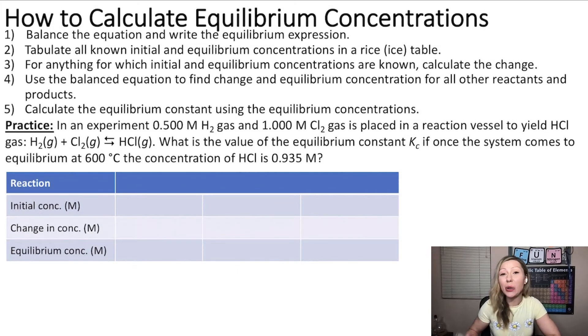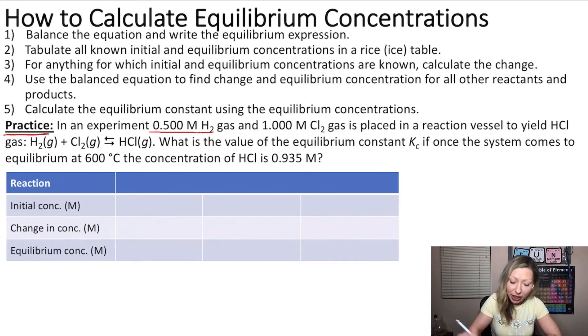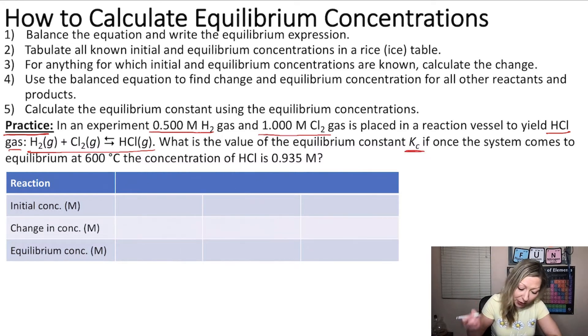Hello guys, let's learn how to calculate equilibrium concentrations using a practice question. Here we have 0.5 mol per liter of hydrogen gas and 1 mol per liter of chlorine gas placed in a reaction vessel to yield HCl gas using this reaction. What is the value of Kc, the equilibrium constant, once the system comes to equilibrium at 600 degrees Celsius and the concentration at that time of HCl is 0.935 mol per liter?